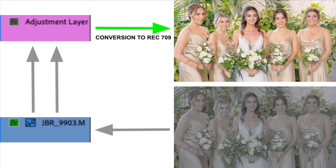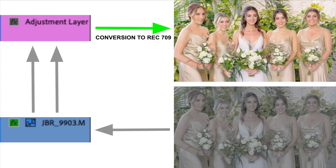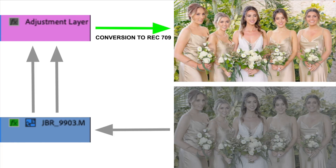Let me explain what's happening. This is the video clip — it's S-Log 3. This video layer is sending the information up to the adjustment layer, where the LUT processes it. The LUT essentially says: 'I see you're sending me S-Log 3 footage — I'm going to convert that over to Rec 709.'